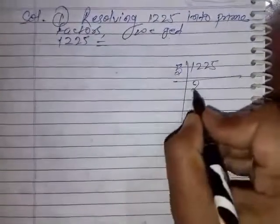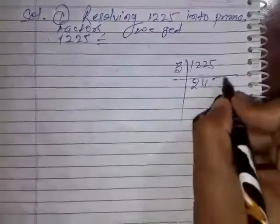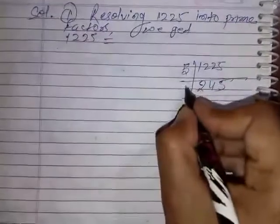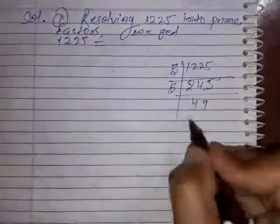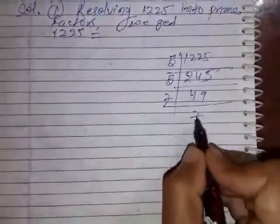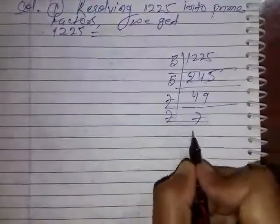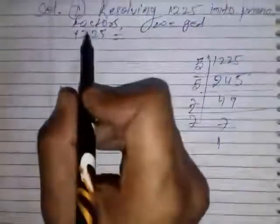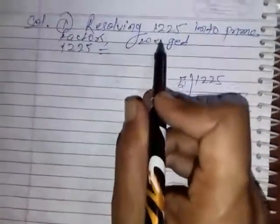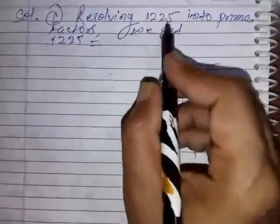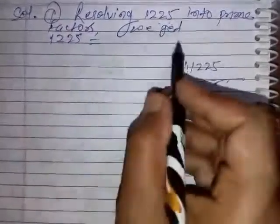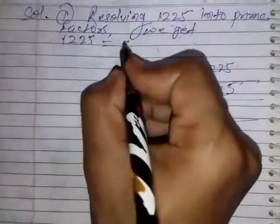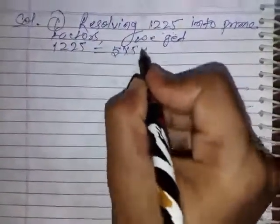We get resolving 1225 into prime factors. We get 5 into 5 into 7 into 7.